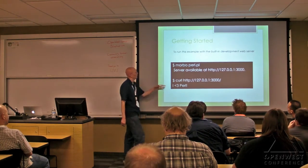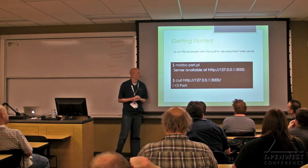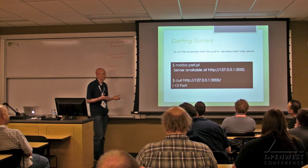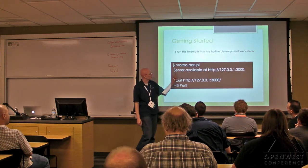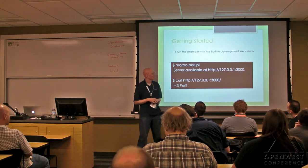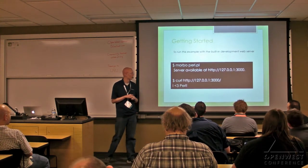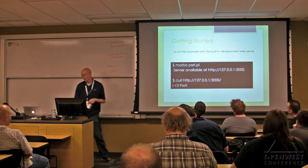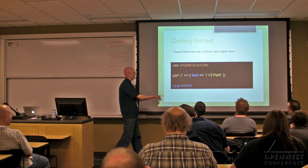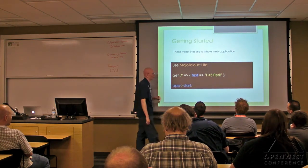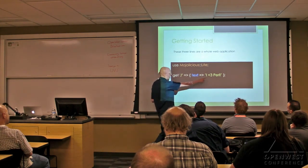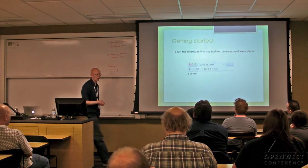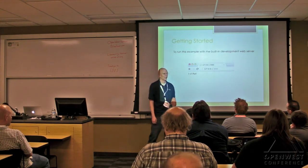Once you've saved that file — say, as perl.pl — you call Morbo, a binary that comes with Mojolicious. It is the development daemon that starts the service. The service is then available at localhost on port 3000 by default. From the command line you can just curl to that and it will print out what you defined in the route. Or if you're on your local machine, you can go to localhost port 3000 and your browser can render that as well.